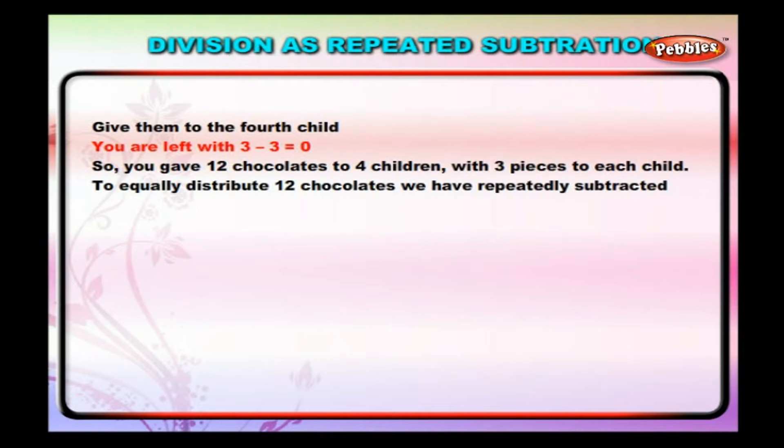To equally distribute 12 chocolates, we have repeatedly subtracted 3 from 12 for 4 times. We write this as 12 divided by 3 is equal to 4.